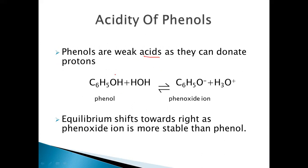Acids are nothing but proton donors. Substances which are able to donate protons are acids. Phenols can donate protons, so they are acidic in nature. This acidity can be explained based on the stability of the phenoxide ion. Phenol can donate a proton, resulting in the formation of the phenoxide ion and the hydronium ion.